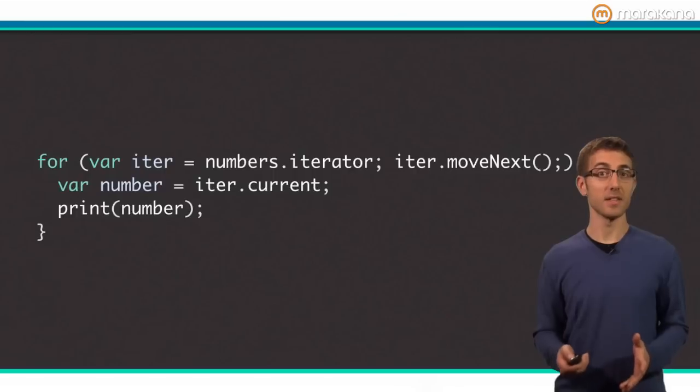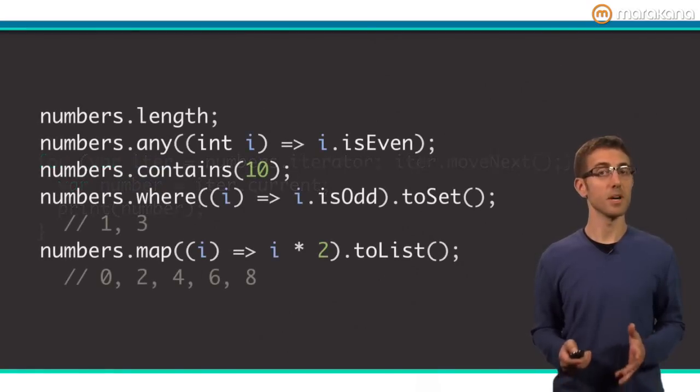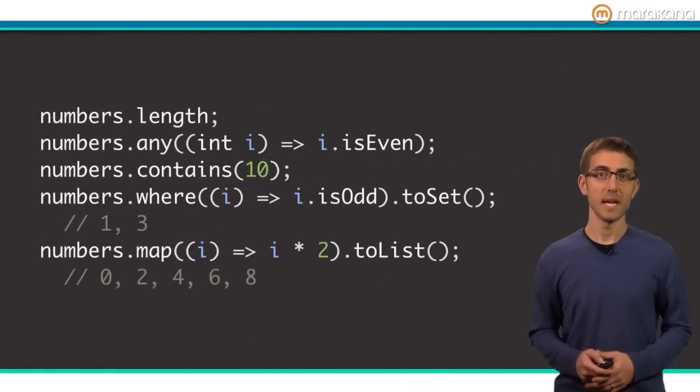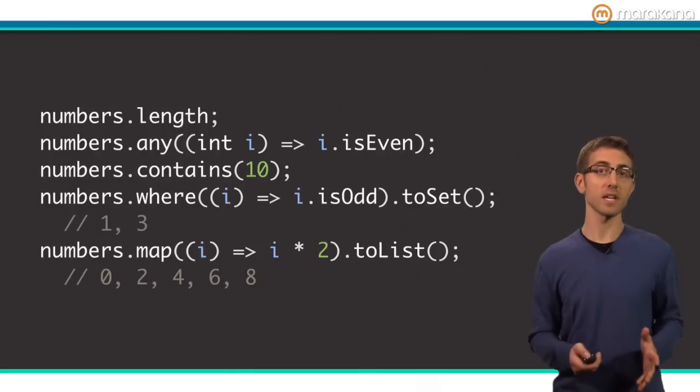I don't know about you, but I find the for in version easier to read. Still, it's nice to know what's happening under the hood. An iterable object can do much more than just iterate through items. Iterable defines very useful methods for filtering, searching, transforming, reducing, and more. Here are a few examples.